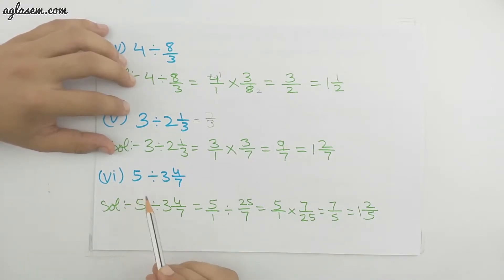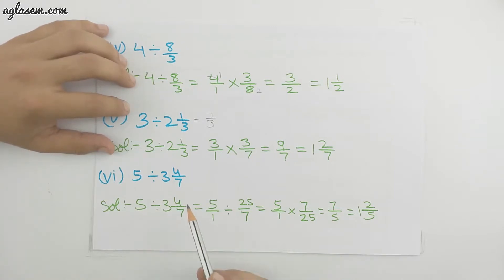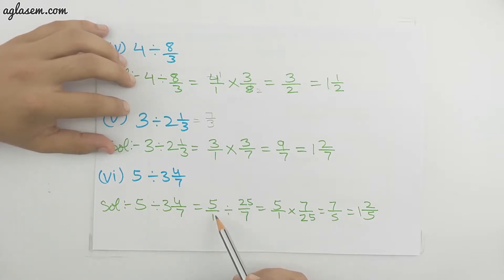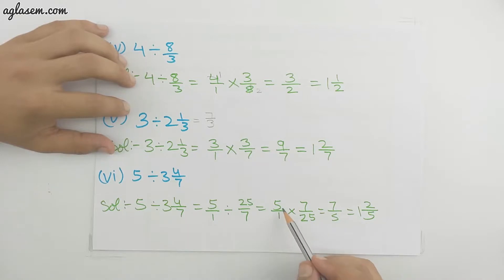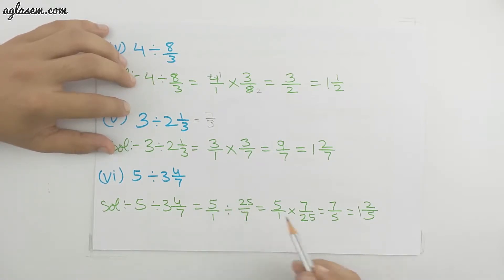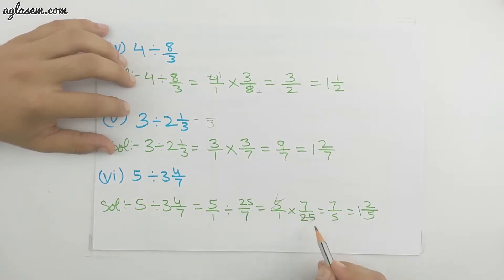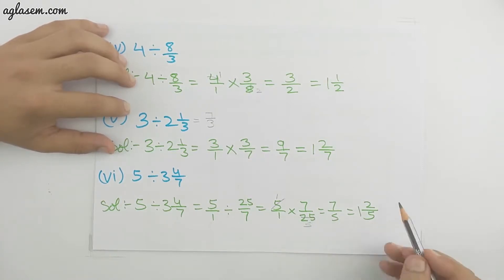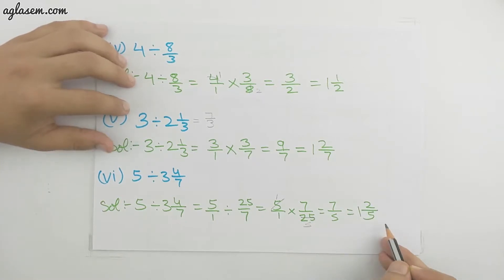The sixth part is 5 divided by 3 whole 4/7. We change the mixed fraction 3 whole 4/7 into the improper fraction 25/7. Dividing 5/1 by 25/7 becomes 5/1 multiplied by 7/25. We can cancel: 5 is common in 5 and 25, giving 1 and 5. Multiplying gives 7/5, which is an improper fraction. We change it to the mixed fraction 1 whole 2/5.